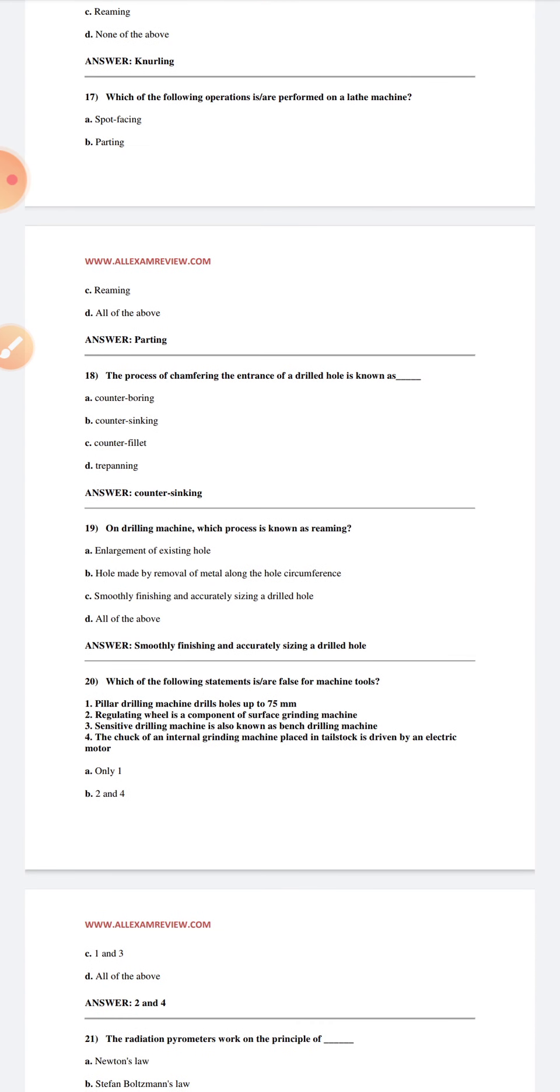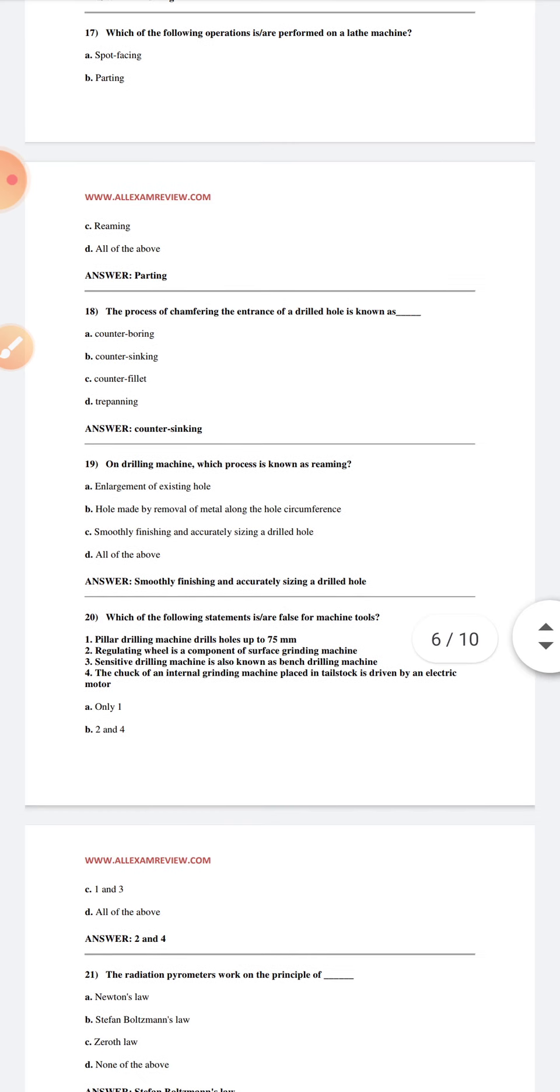Which of the following statement is false for machine tool? Regulating wheel is a component of a surface grinding machine. The chuck on internal grinding machine placed in tailstock is driven by the electric motor. The pillar drilling machine drills holes up to 75 mm. Sensitive drilling machine is also known as the bench drilling machine.